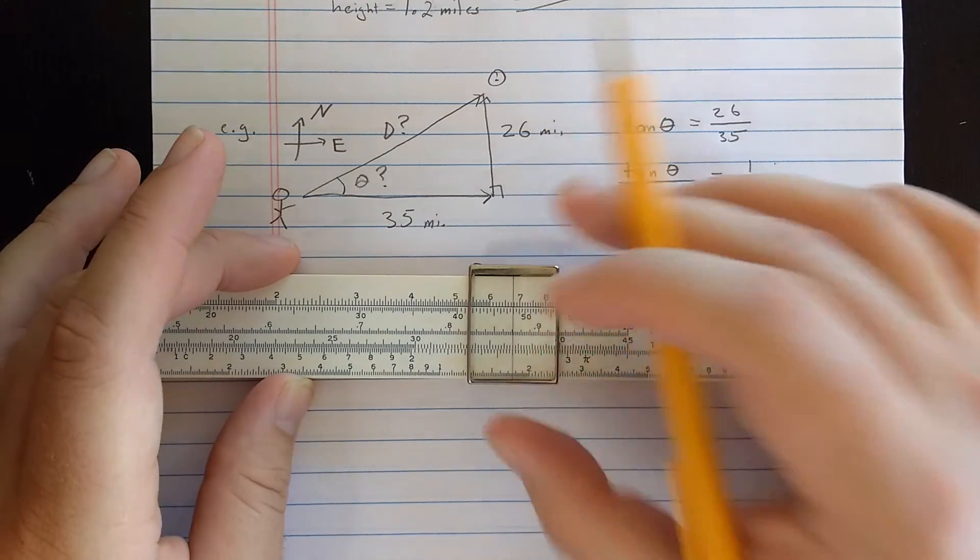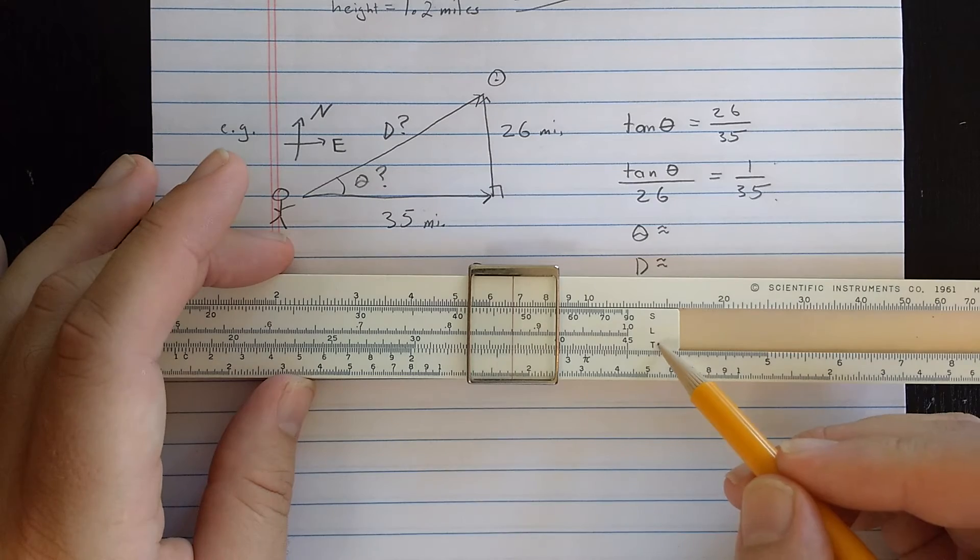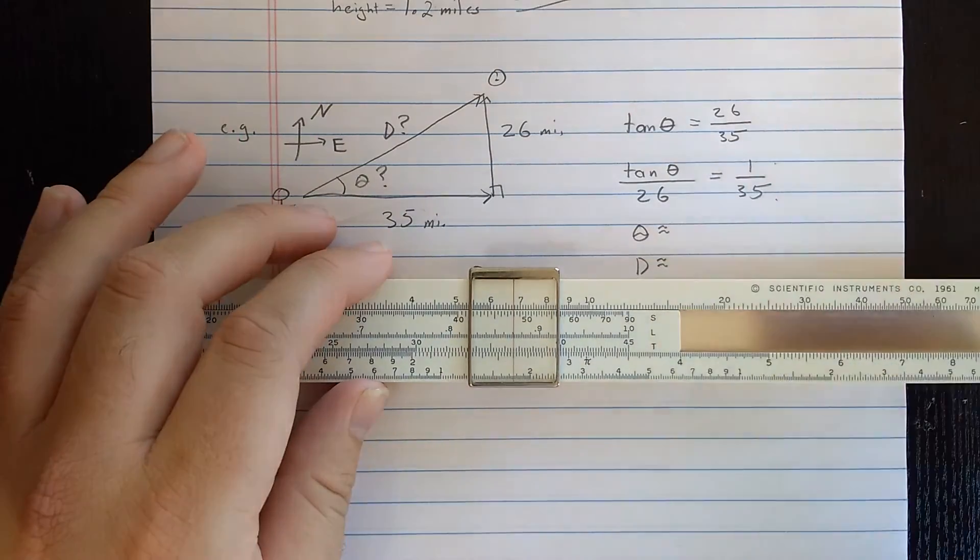So then, where 26 is on the D scale, here, I should read tangent theta on the T scale. Remember, T scale is this one, and I have 35, 36, about 36.6 degrees.